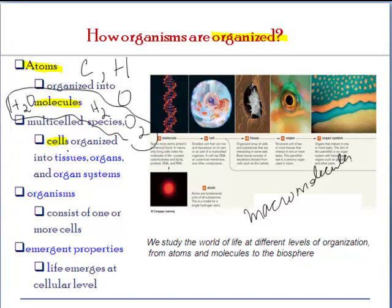Cells of a similar kind will form tissues. For example, muscle cells of the same kind organize and collect to form tissue. Different kinds of tissues — such as cardiac tissue, connective tissue, and bone tissue — then form different regions called organs. Organs are put together in a more structured format to form organ systems. For example, the digestive system is not just the stomach; it includes the intestines, mouth, esophagus, and so forth. Organ systems then get organized to form organisms, which are made up of one or more cells.